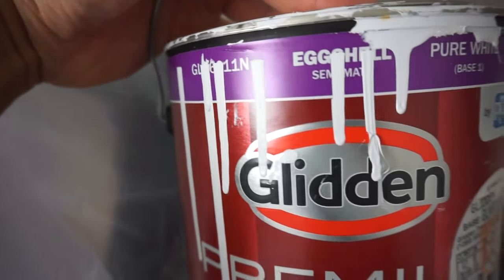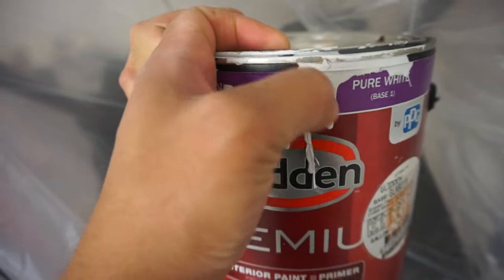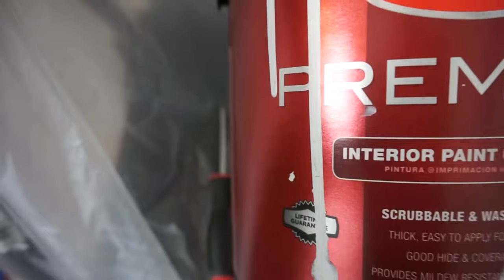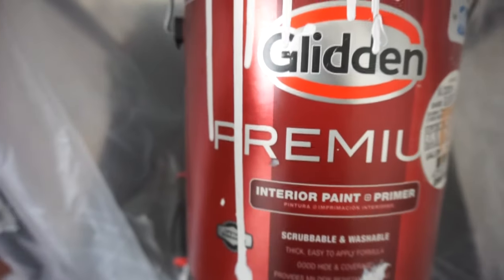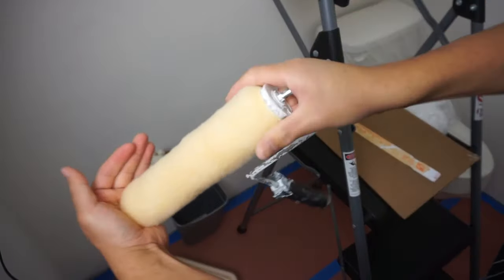Now the paint that I'll be using for this project is the eggshell finish. It has a little bit of shine into it which is perfect for the walls and it is by Glidden and it's also interior paint, it already has primer in it.